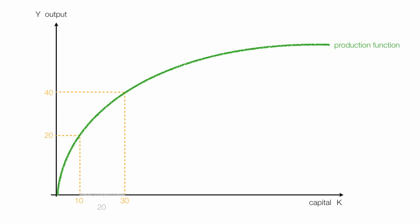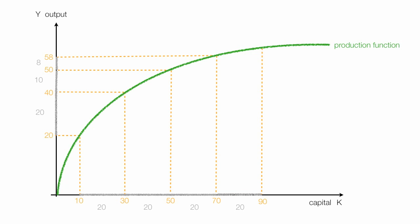Increasing capital by 20 gets me an increase in output of also 20. When capital is increased again by 20, output will increase by 10. Again, an additional increase of capital by 20 results in output increasing by 8. Increasing capital again by 20 causes output to increase by 2.